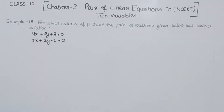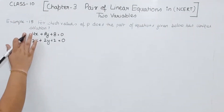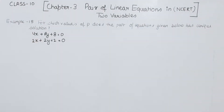Example number 15 says: for which value of P does the pair of equations given below have a unique solution? These are the pair of linear equations we are having, and we have to find the value of P when we are having the unique solution.